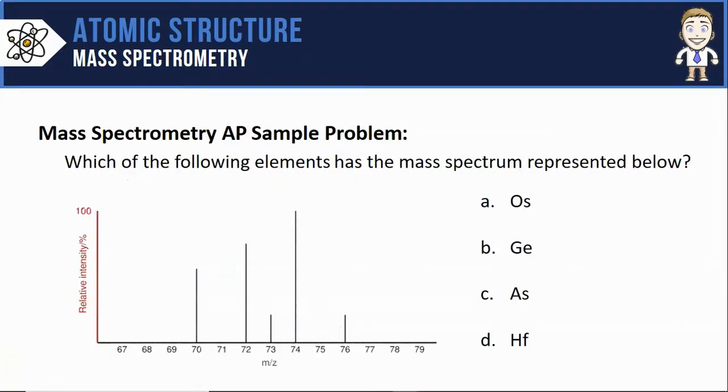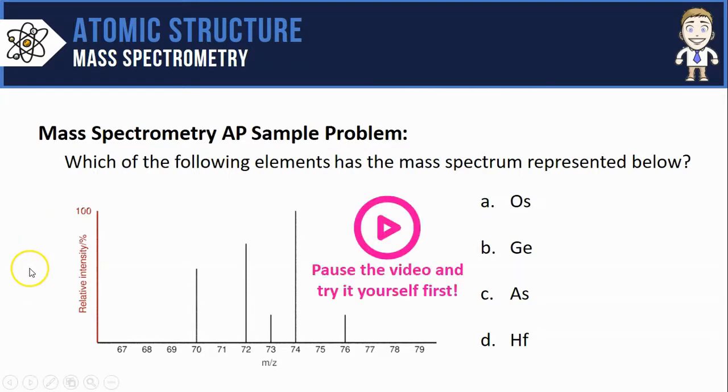So let's close the video with a typical AP multiple choice question using these ideas. It says, which of the following elements would have the mass spectrum represented below? Again, pause the video and try this yourself before listening to me go over the answer.